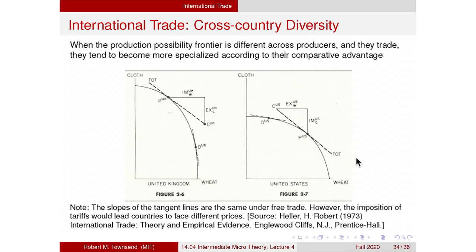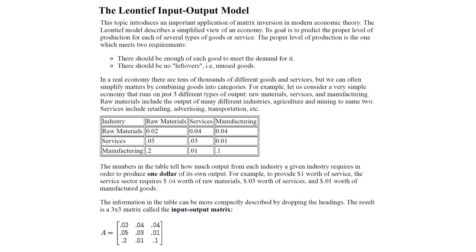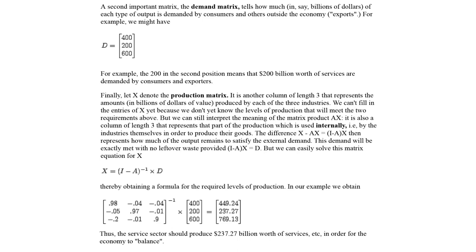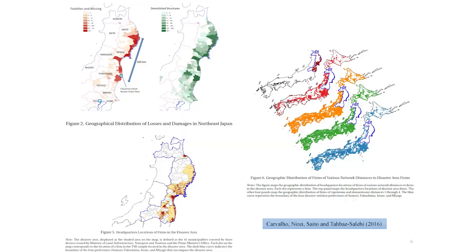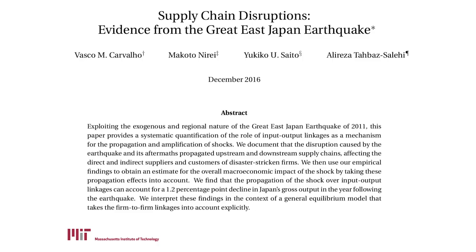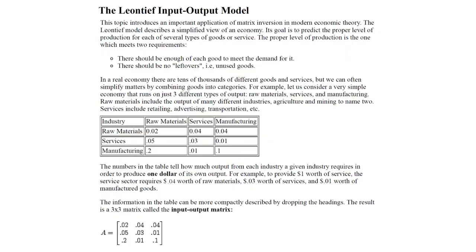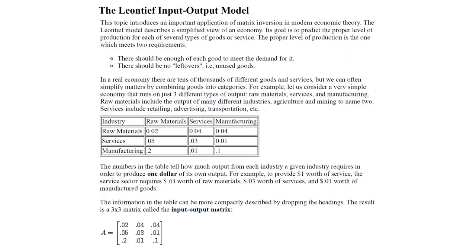We're getting very close to integrating production theory with utility maximization to look at full equilibrium. Next time we'll finish this production lecture — covering Leontief, Google/Facebook PageRank, and the Great Japanese Earthquake as production applications — and then move to lecture five to combine consumer theory with production using linear programming techniques. See you soon.